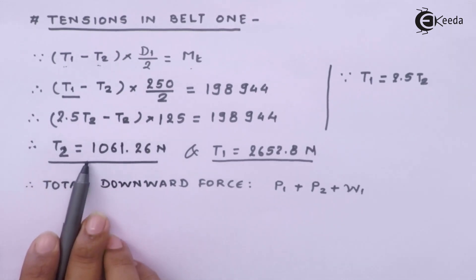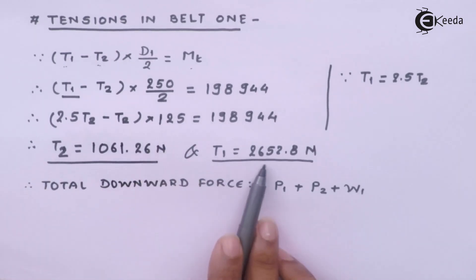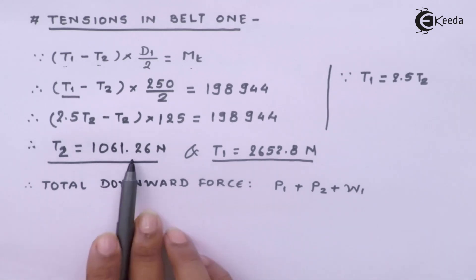And therefore substituting the tension 1 value will get upon solving. So the tension 2 comes out to be this much and substituting back will get this value. So these are the respective tensions in the pulley number 1 belt.